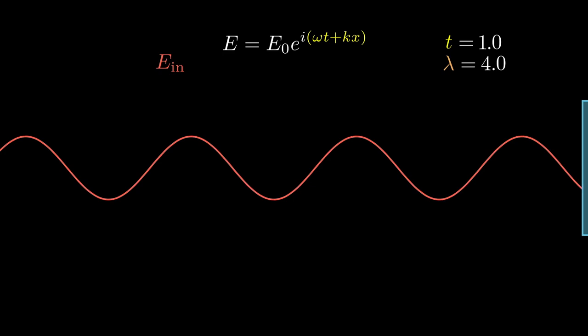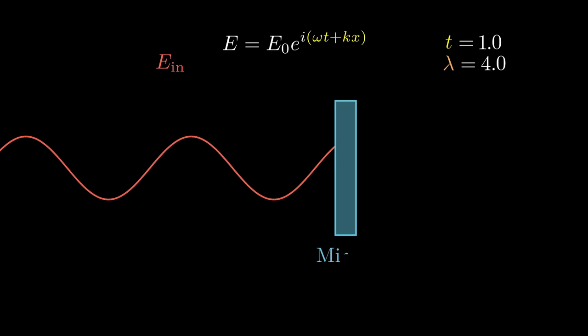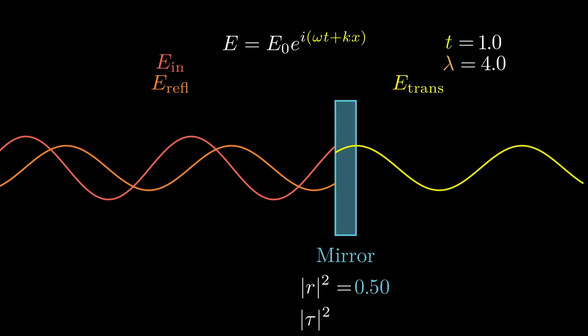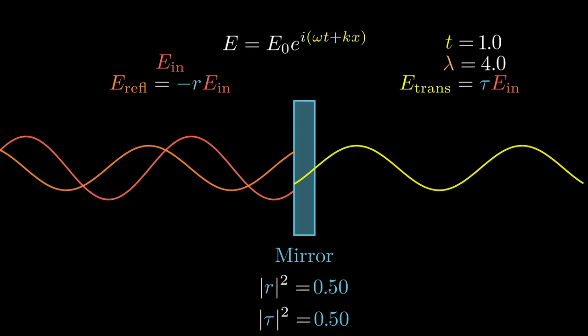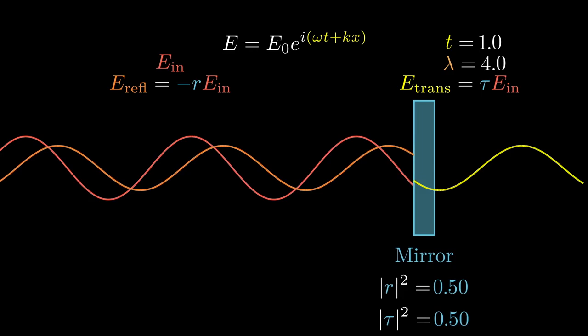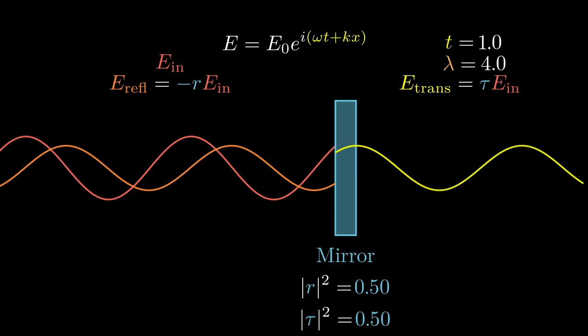Next, we introduce a partially reflecting mirror to our laser beam. This splits our input laser beam into a reflected beam and a transmitted beam. We can move our mirror around and watch what happens. The phase of the reflected beam is very sensitive to the mirror position, but the transmitted beam doesn't care.